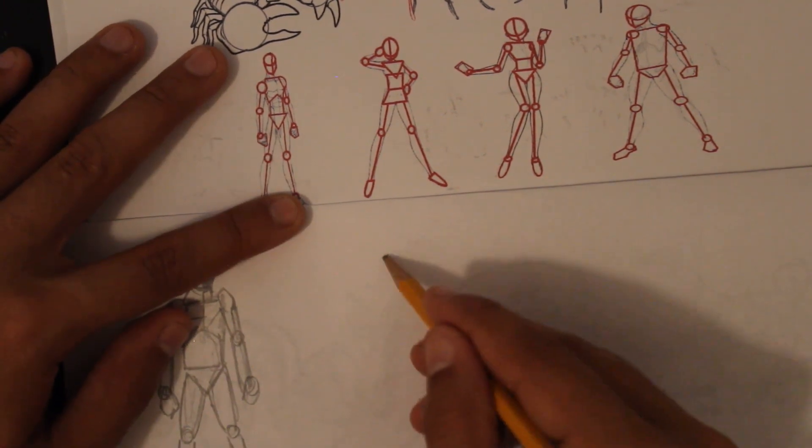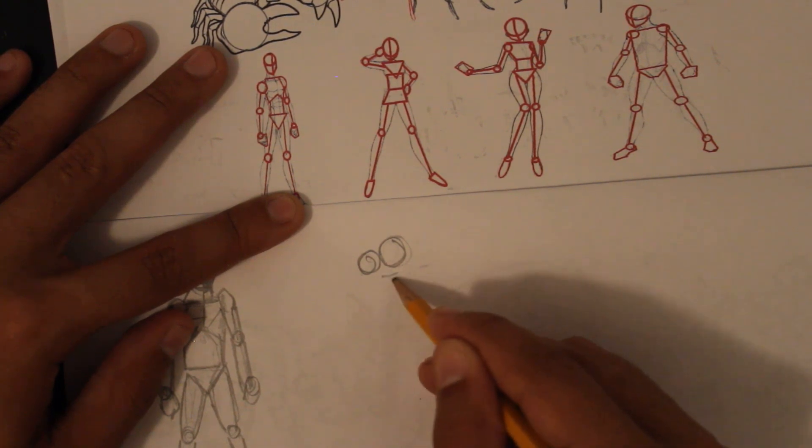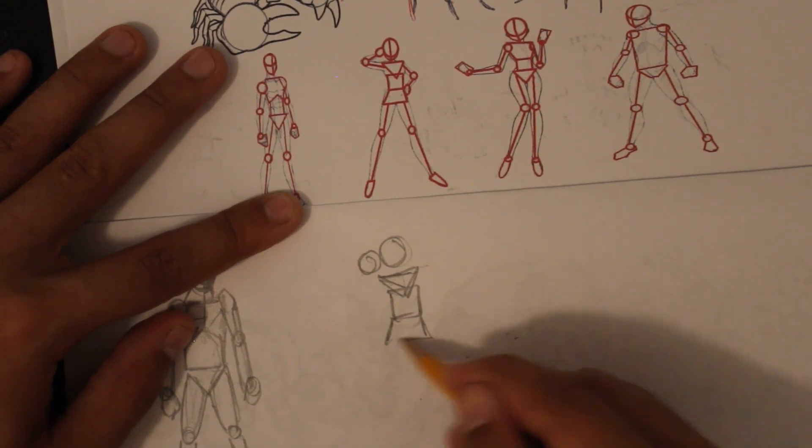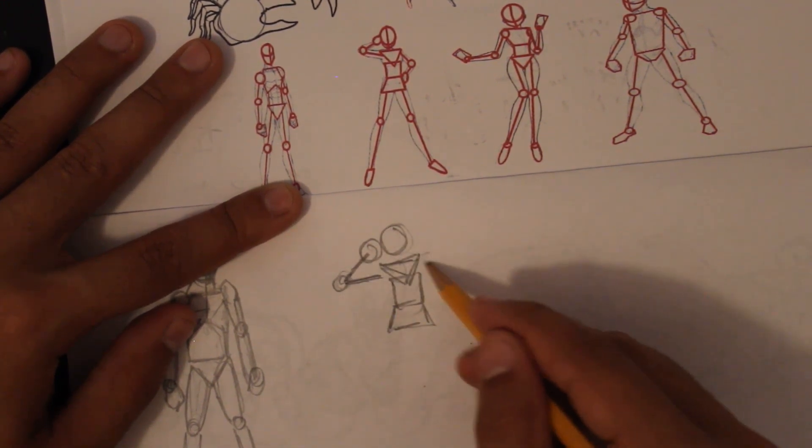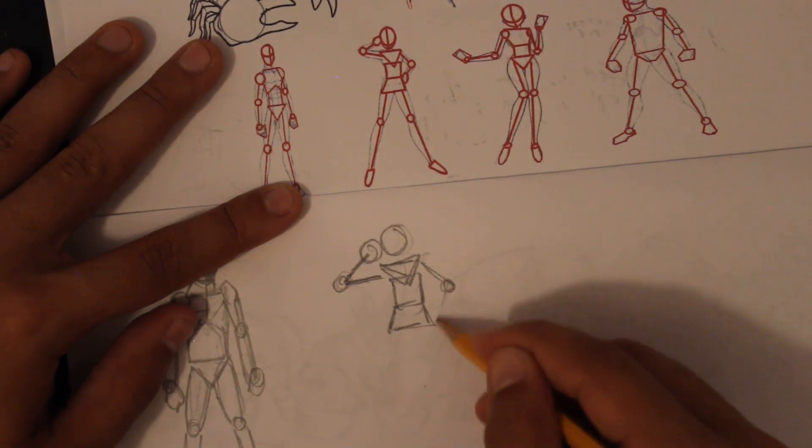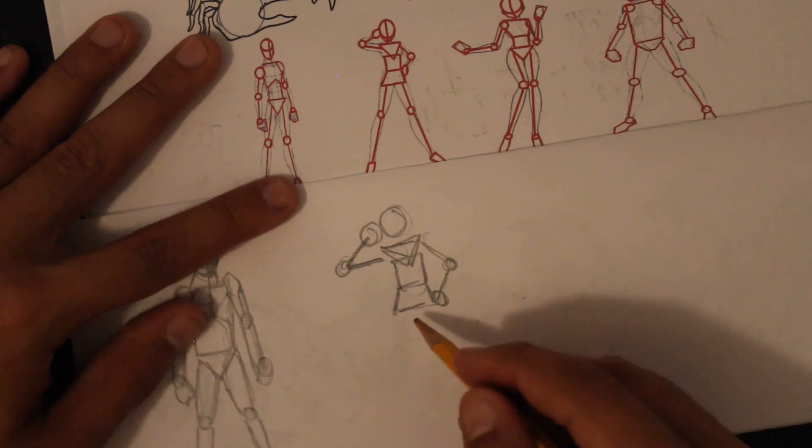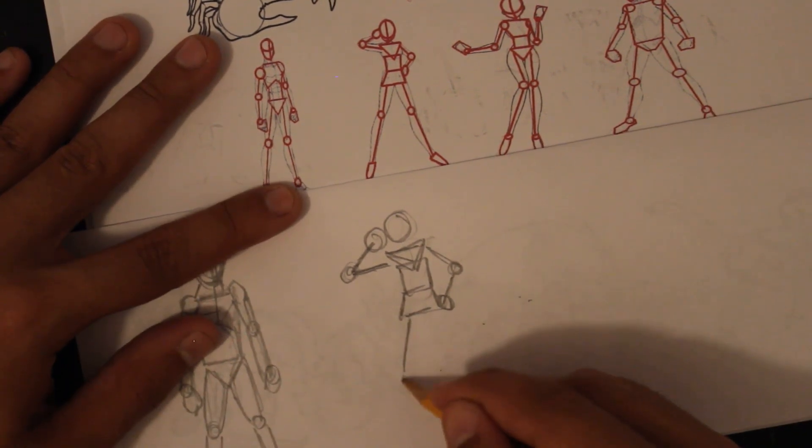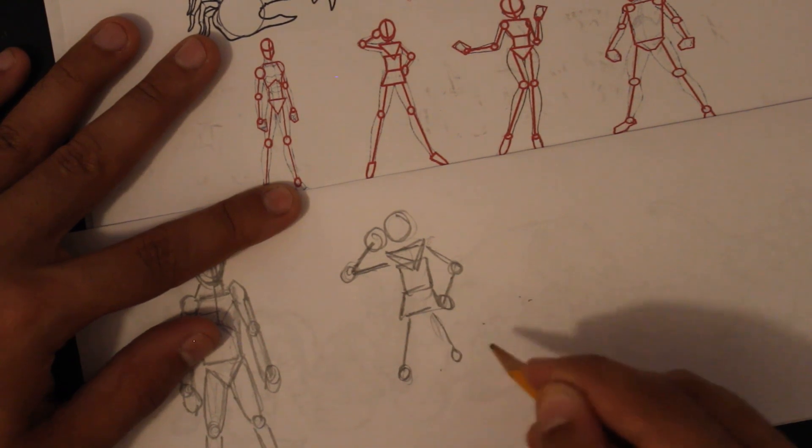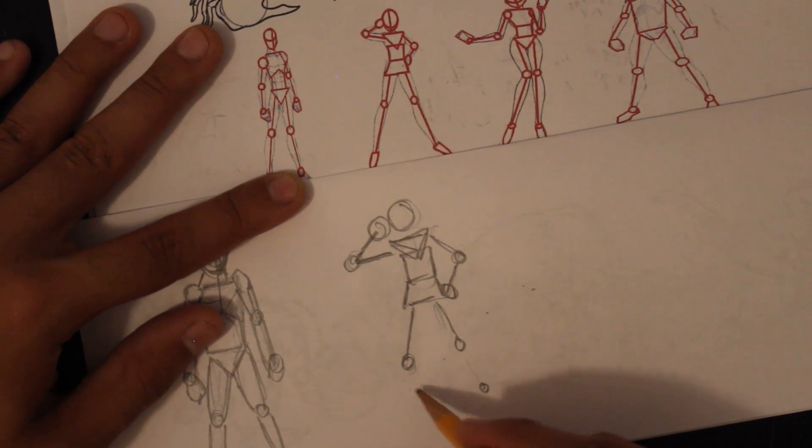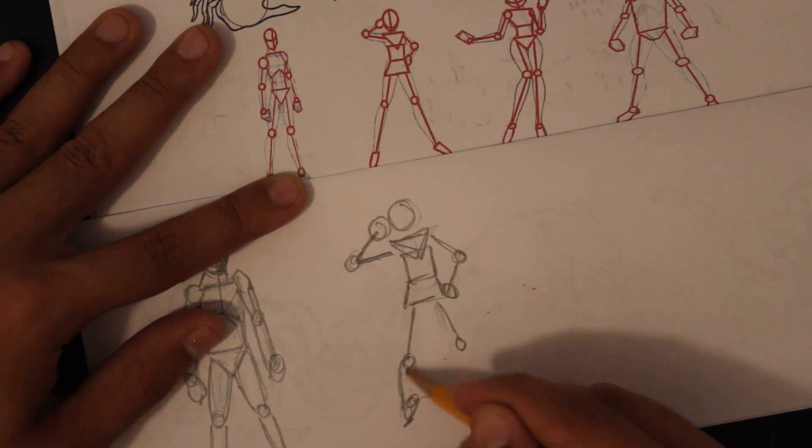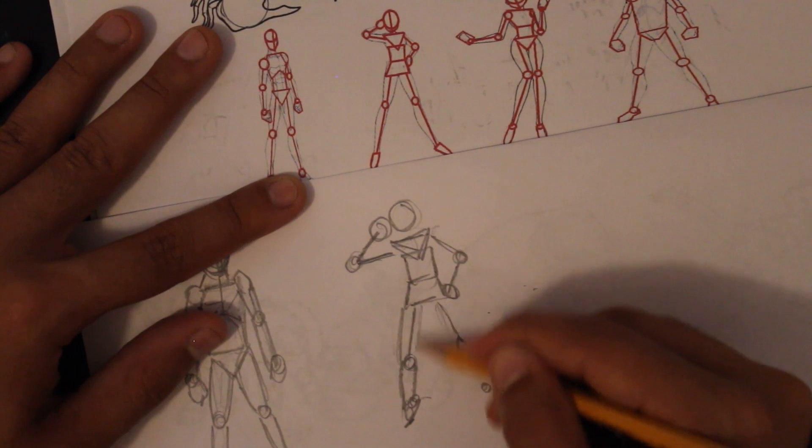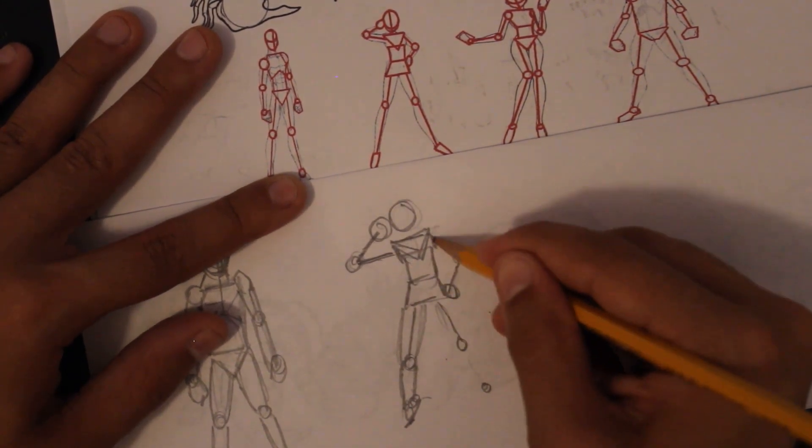And if you have a bit of imagination, you can see it, you know. You can see the figure before there's anything there. And then just put a quick outline to show the calves, et cetera, et cetera.